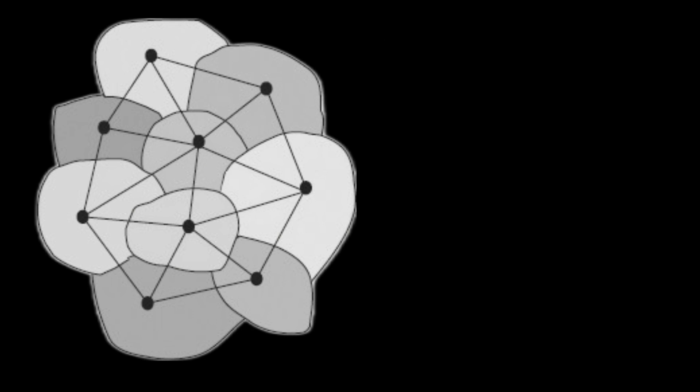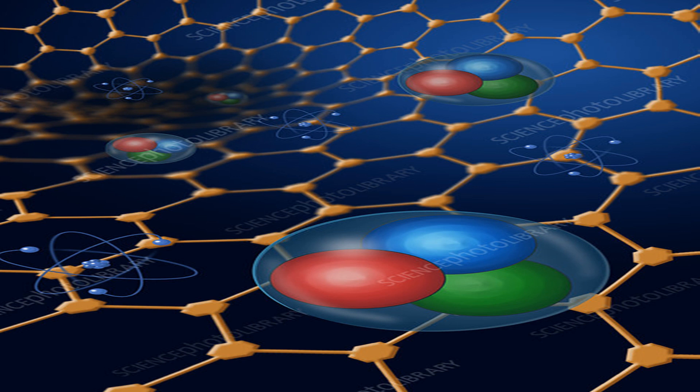Basically, space is made up of a large number of quantum loops which are connected to each other. Now imagine drawing a closed surface anywhere in the network. Its volume would be defined by the number of intersections or nodes it encloses, and its area by the number of loops that pierce or pass through it.